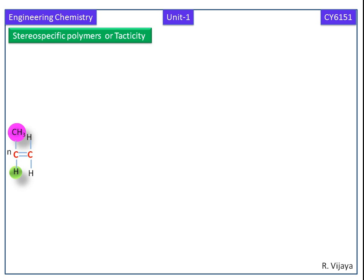The n number of propene or methyl ethylene gives polypropene. It gives three types of structural polymer.